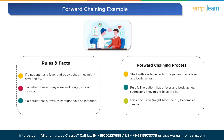The process could continue with additional rules and facts to derive further conclusions. In essence, forward chaining begins with the known facts and applies rules to generate new information or conclusions. It's often used in systems where initial data is available and the goal is to deduce new information or outcomes based on that data and predefined rules.